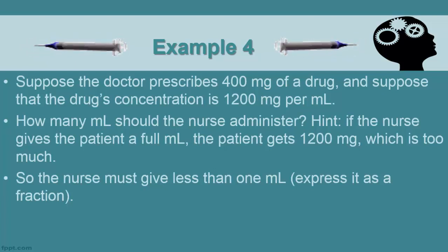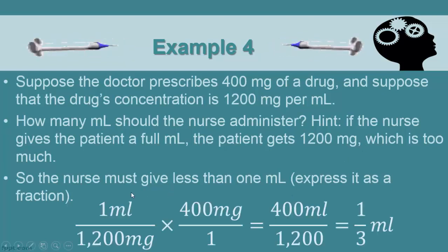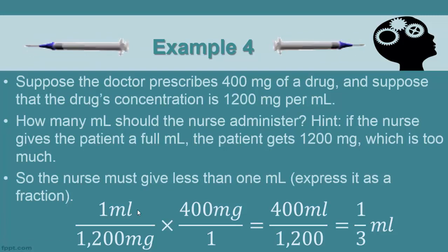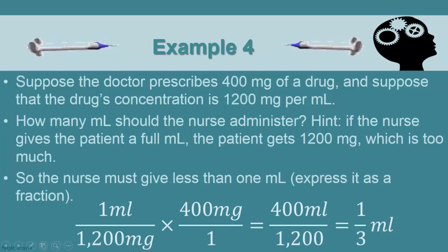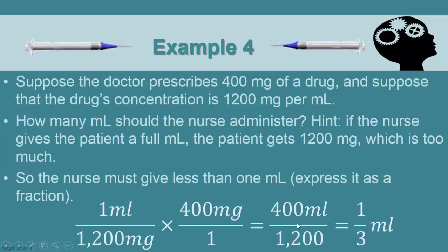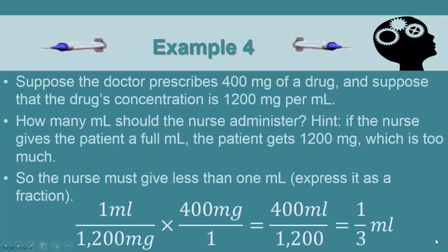Returning to the PowerPoint for example four: we had one milliliter to one thousand two hundred milligrams, multiplied by the four hundred milligrams the doctor prescribed, canceled the milligrams top and bottom, giving four hundred milliliters over one thousand two hundred. Simplified, that is one-third of a milliliter.